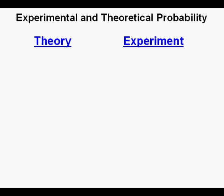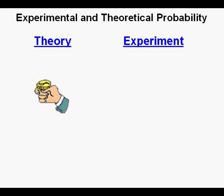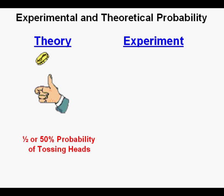In the scientific method, there are two things that work hand in hand. First, there's theory — it could be the theory of evolution or any other theory or hypothesis. Then an experiment is designed to test that theory or hypothesis. Math will state a theory: in the tossing of a coin, there is a one-half or 50% probability of tossing heads.